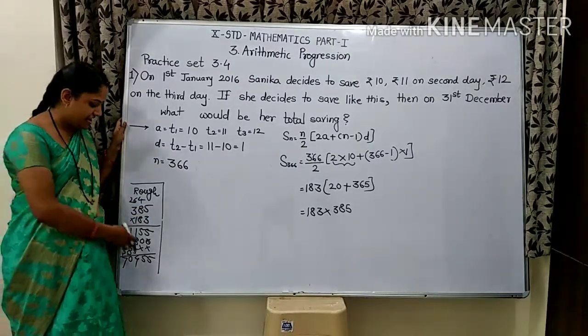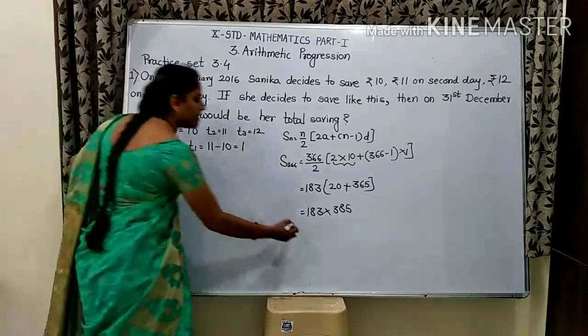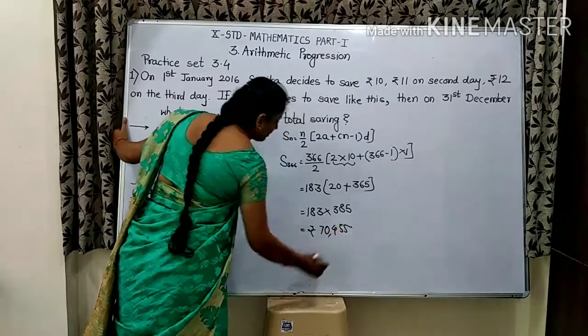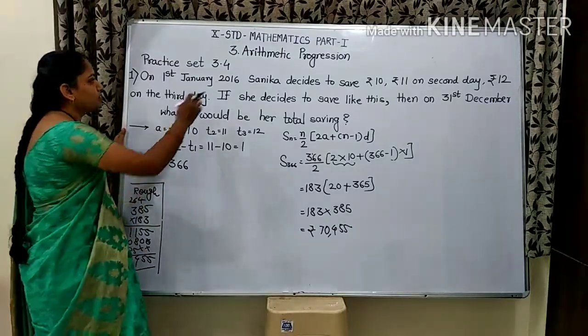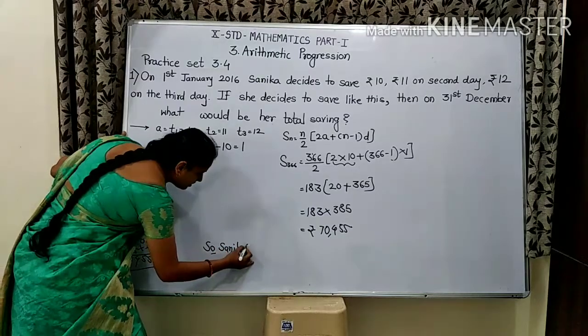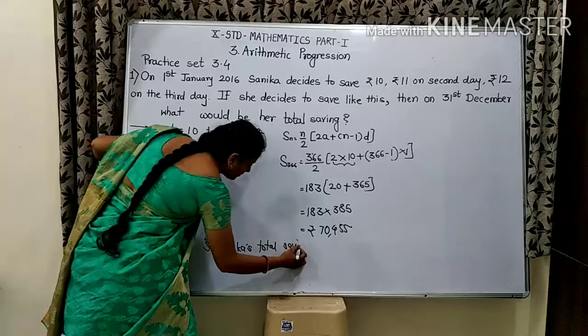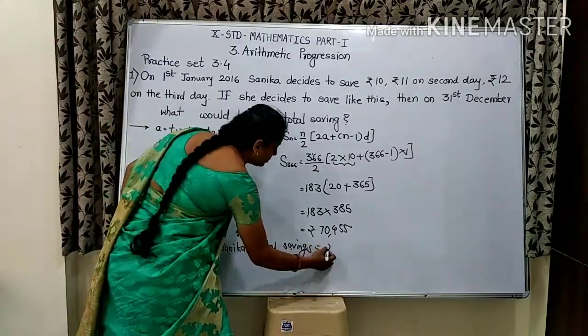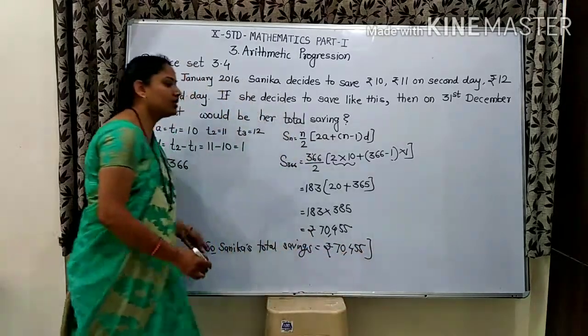Then, this product is 70,455. We can see Rs. 70,455. And we can see the answer in the statement. So, Sanika's total savings equal to Rs. 70,455.